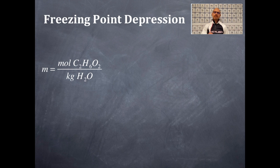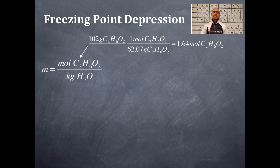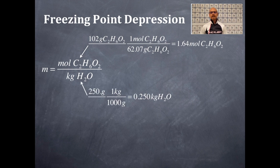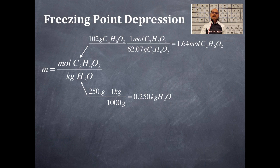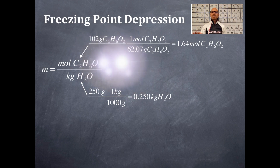The molality equals moles of solute — ethylene glycol — divided by the kilograms of water. Taking the 102 grams of ethylene glycol divided by its molar mass gives 1.64 moles of ethylene glycol. Converting 250.0 grams of water to kilograms gives 0.250 kilograms, which is the denominator. Dividing 1.64 by 0.250 gives a molality of 6.56 molal.